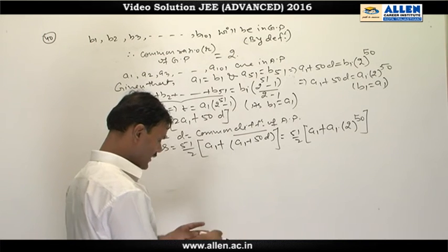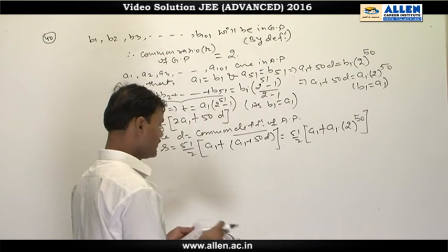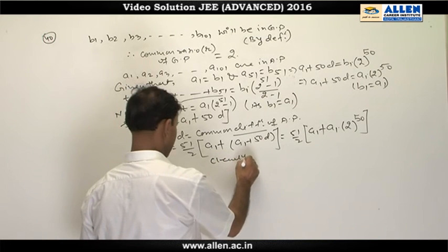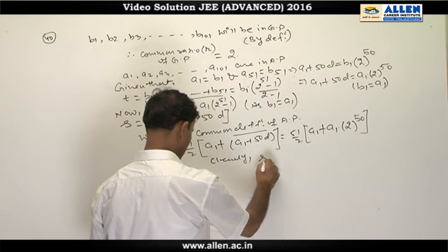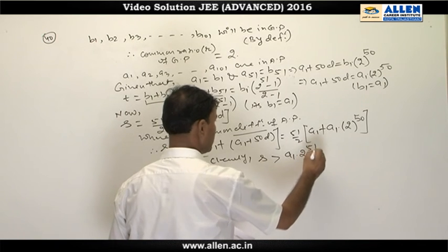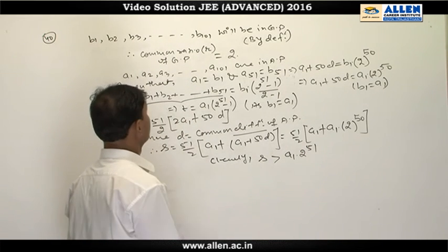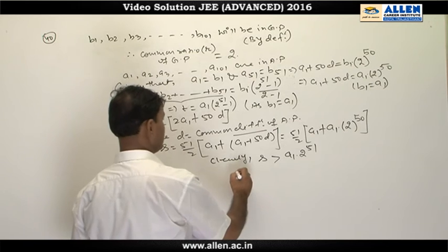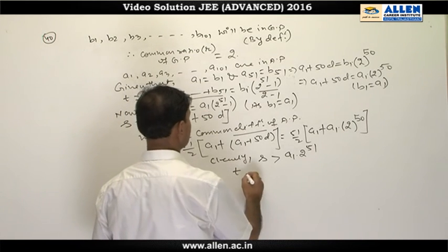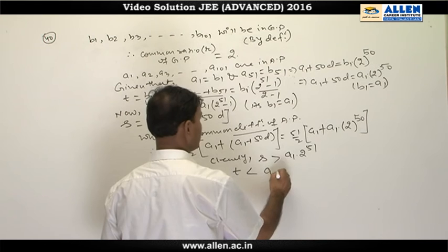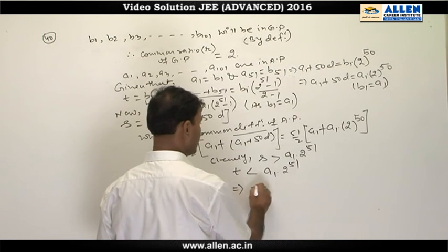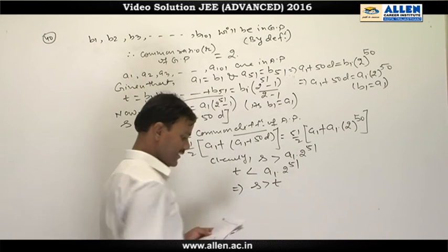Clearly S = (51/2)·a1·(1 + 2^50), which is greater than a1·2^51, while T = a1·(2^51 − 1), which is less than a1·2^51. From these two results we can conclude that S is greater than T.